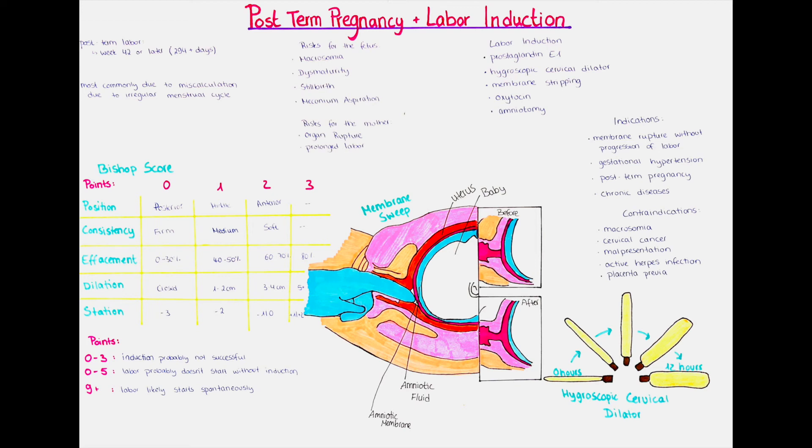One way to induce labor is by administering prostaglandin E1, which can be applied either vaginally or orally. Prostaglandins help the cervix to dilate and for contractions to occur. After the administration of prostaglandins, it can take up to five days for labor to start, as the cervix usually dilates slowly.